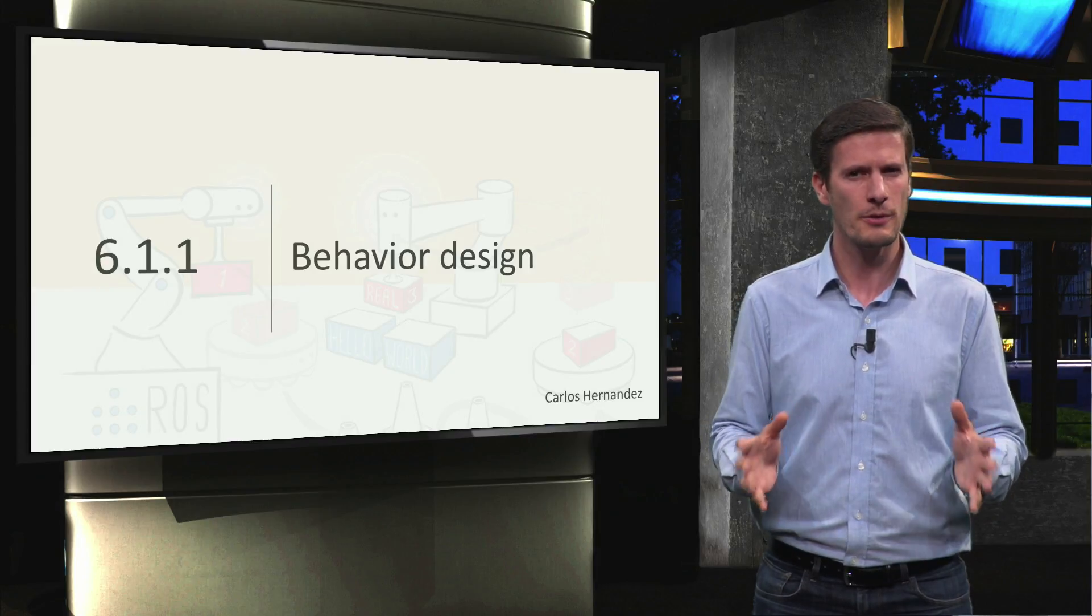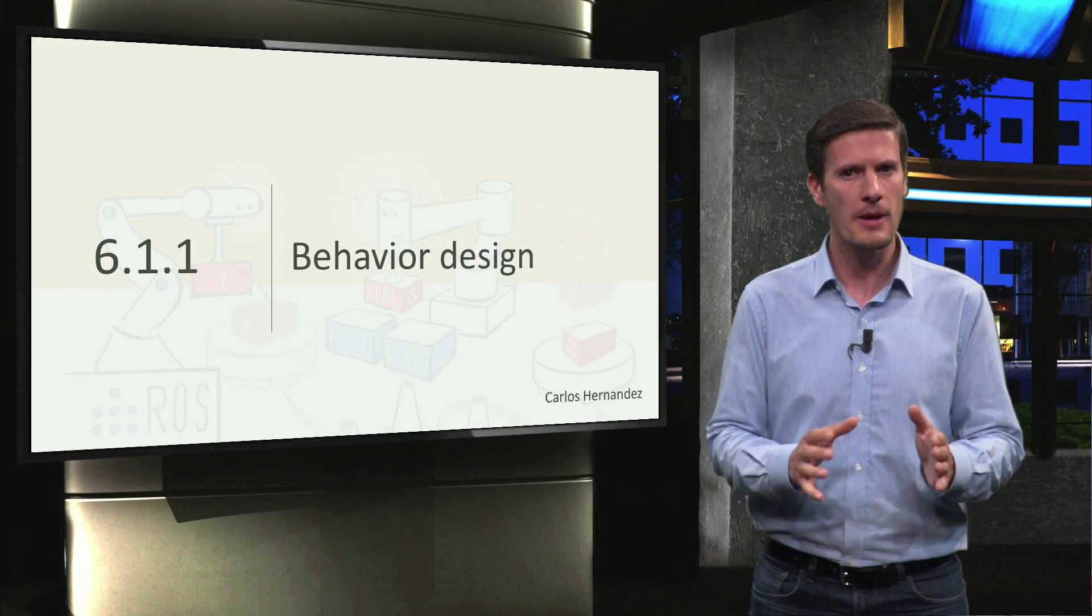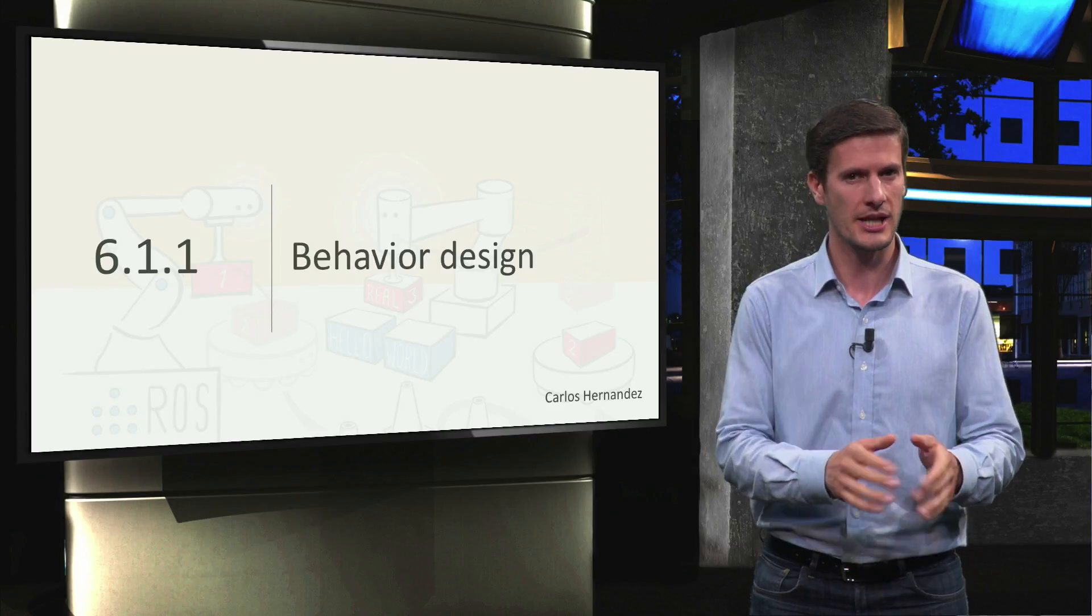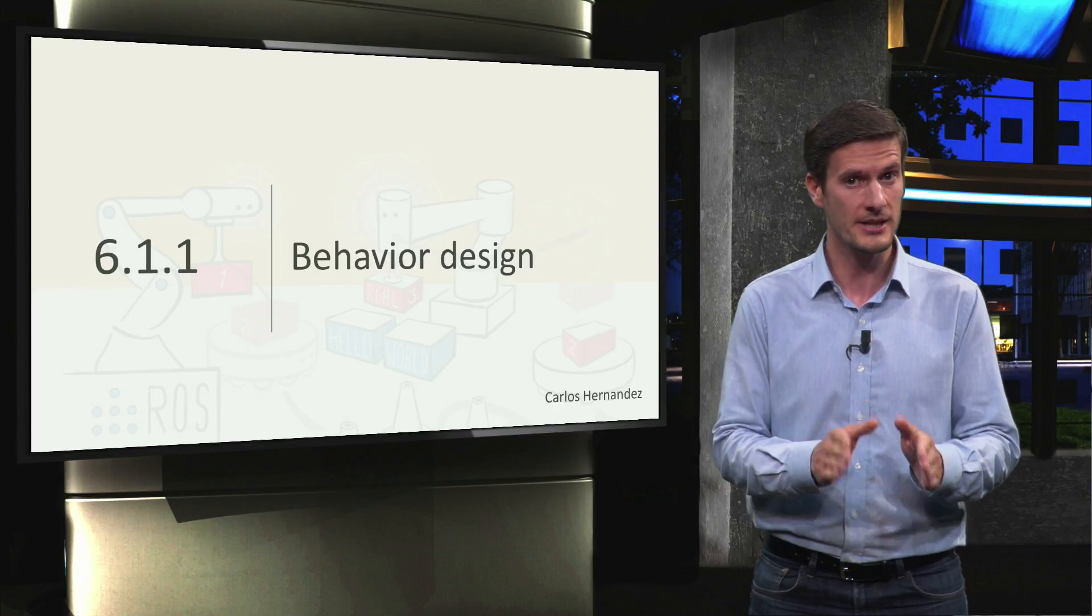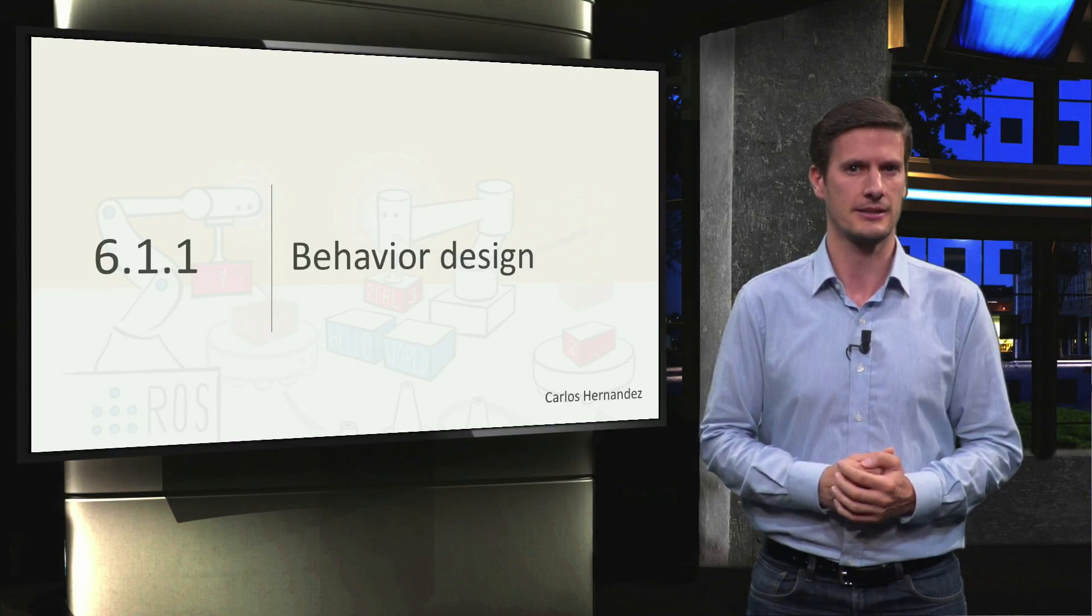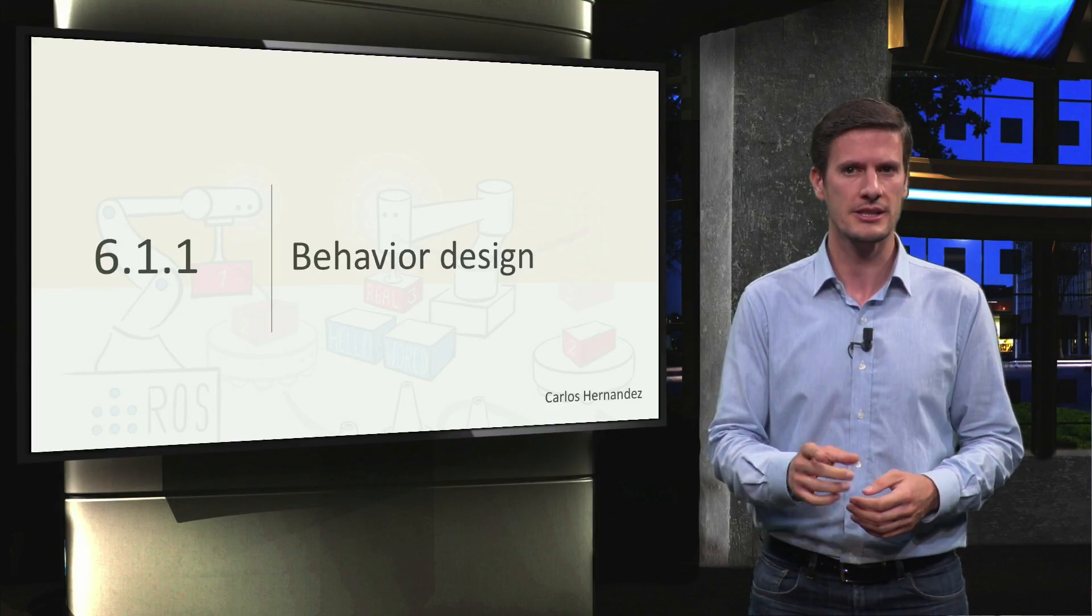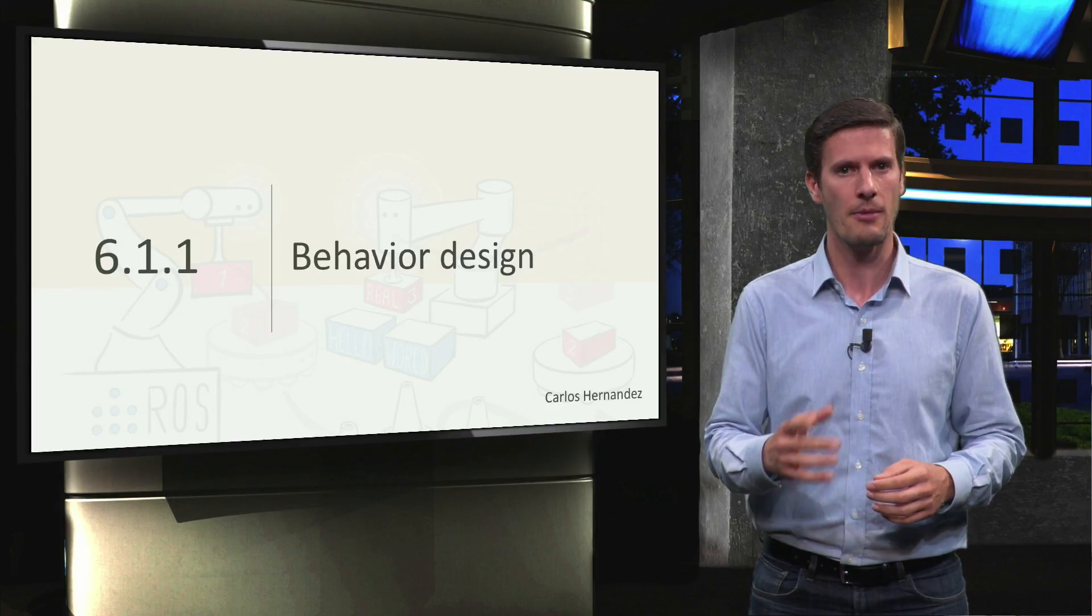But now, how do we program it? How do we make our robot execute all those actions, the specific way they need to be executed to complete the task? This is what behavior design is about and we are going to learn about it in this unit.